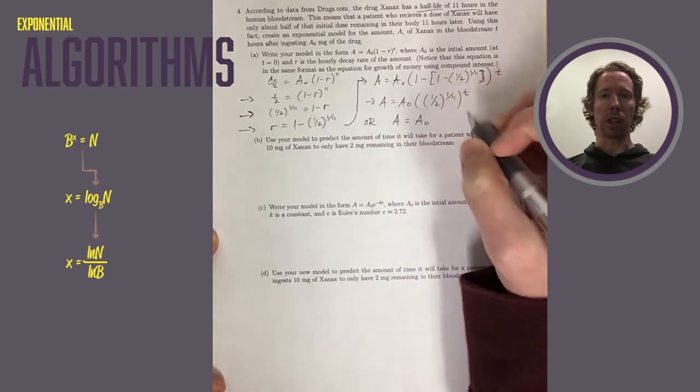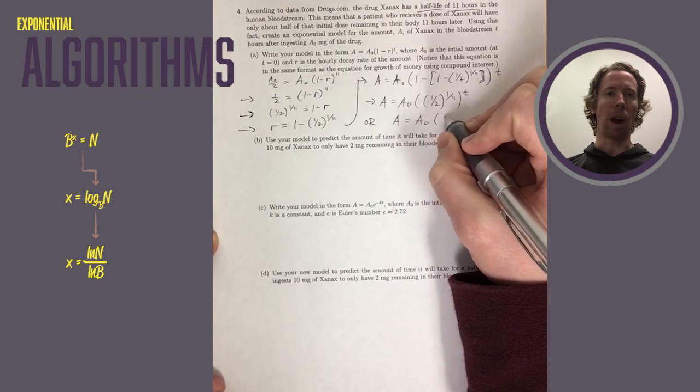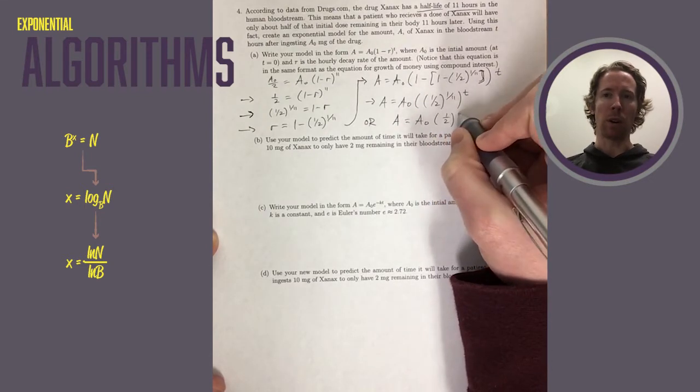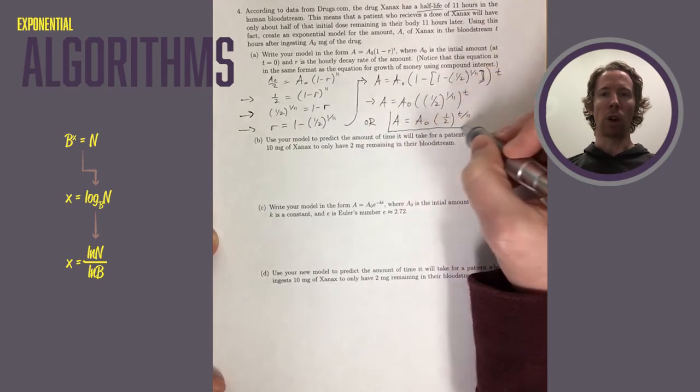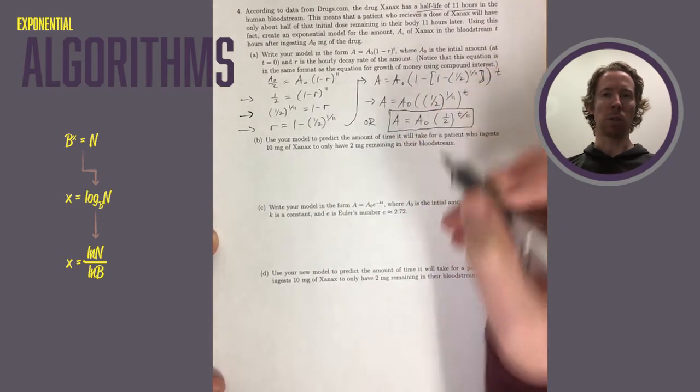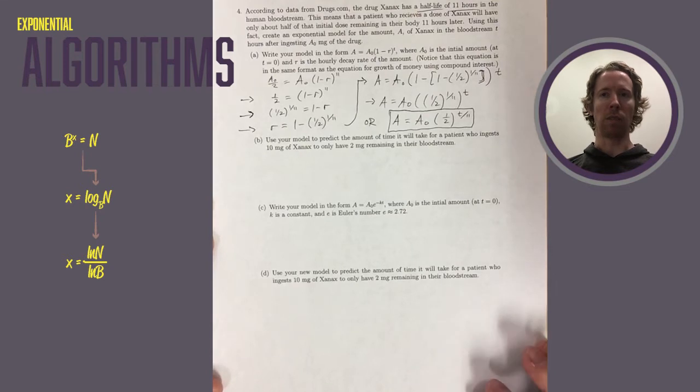So if we want, we could change this 1 half raised to a power, and all of that raised to another power. It just means multiply the exponents. So 1 over 11 times T over 1, multiply straight across. You could write that as T over 11.